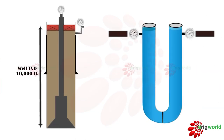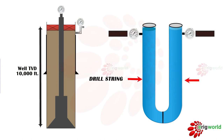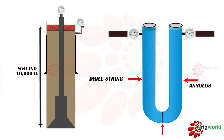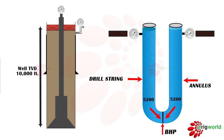Any well can be considered as a U-tube. One arm of the U-tube is considered the drill string and the second arm as the annulus. Where both arms connect is considered the BHP. The hydrostatic pressure created by the mud column can be calculated using the formula, which equals 5200 psi.